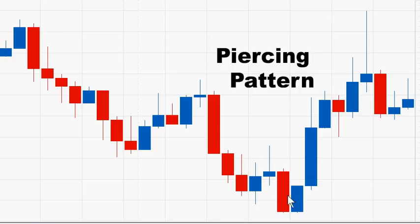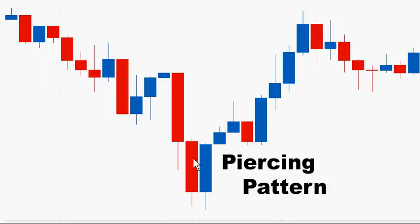The piercing pattern is a very similar pattern to the bullish engulfing pattern. It is a two candle formation after a downtrend. The first candle is a red bearish candle, which is a continuation of the downtrend. The second candle is a bullish blue candle where the body closes more than halfway up the first red candle. Ideally the blue candle will close at or very near its highest price. The longer the red and blue candles, the more forceful the reversal, and the higher the blue candle closes up into the red candle, the stronger the reversal.